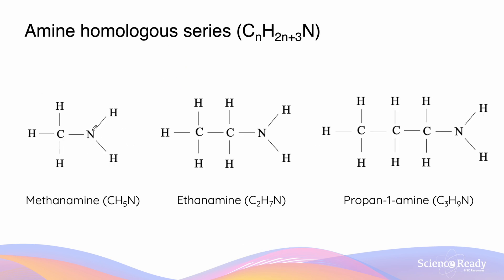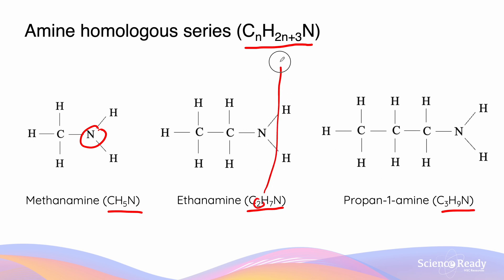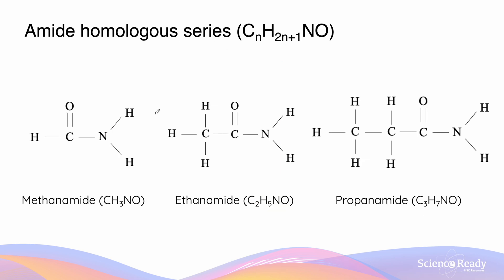Amines are compounds which contain a singly bonded nitrogen in place of one of the carbons. They have the general formula CnH2n+3N, which is consistent in methanamine, ethanamine and propanamine. Amides are like amines in that they contain a nitrogen in place of a carbon, but they cannot be classified as amines because of the presence of an adjacent carbonyl group — similar to the relationship between a carboxylic acid and an alcohol. The adjacent carbonyl changes the chemical reactivity of the amide relative to an amine.